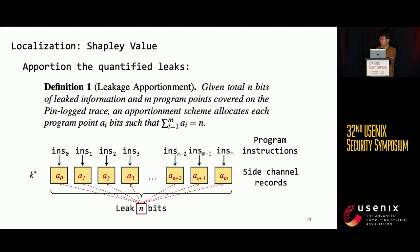To localize the vulnerable program points, we apportion the quantified leakage among records in one side-channel observation trace. If the apportioned leakage for one record is greater than zero, then its corresponding instruction is secret-dependent. The apportionment can be done by computing the Shapley value for each side-channel record. The Shapley value is a well-formulated solution in game theory — we view the leakage over one side-channel trace as a cooperative game among all its records, and the Shapley value of each record quantifies how many bits it contributes to the overall leakage.